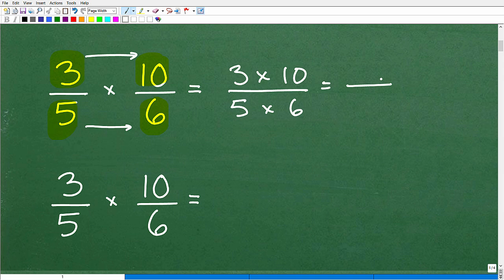And this is the setup. Numerator times numerator, and here if we had three fractions, it would be numerator times numerator times numerator. You get the idea. And then denominator times denominator. So 3 times 10, of course, is 30. 5 times 6 is 30. 30 divided by 30 is 1. So super easy problem.